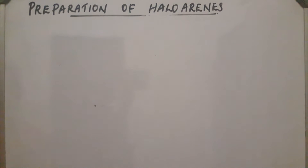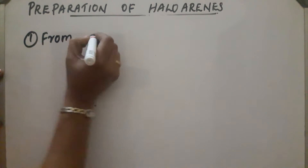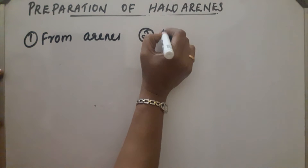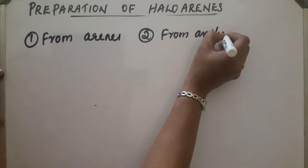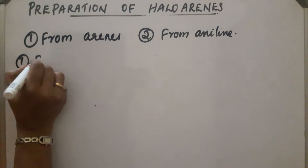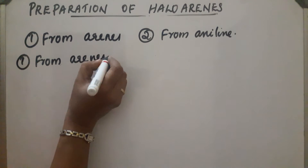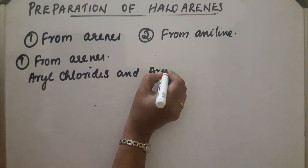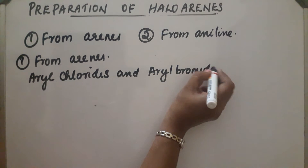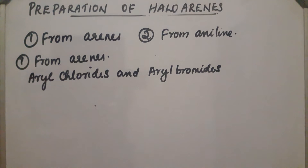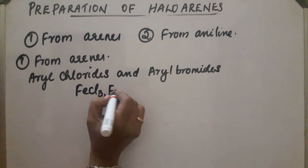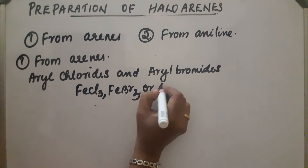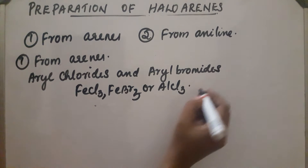Preparation of haloarenes. The first method is from arenes. Aryl chlorides and aryl bromides can be prepared by the direct chlorination or bromination of aromatic hydrocarbons in the presence of Lewis acid catalysts like FeCl3, FeBr3, or AlCl3. The reaction takes place in the dark and cold.